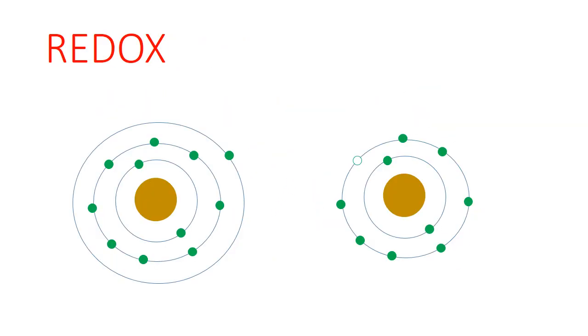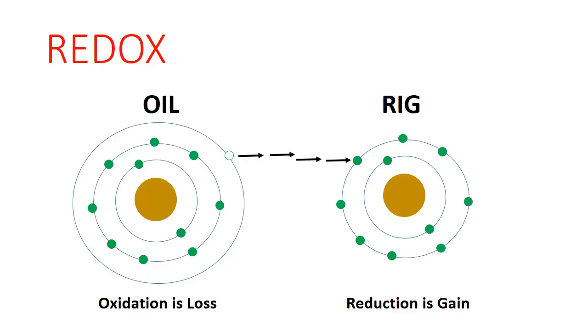So from this, you can see that an atom cannot become oxidized without another atom becoming reduced. These reactions are completely tied together. To help remember what the terms reduction and oxidation mean, sometimes students will use the mnemonic oil rig. Oil means oxidation is loss. Rig means reduction is gain.